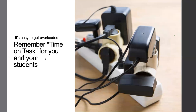A good fully online course takes about 80 to 120 hours to develop — and that can be as intimidating as a giant strawberry is to a little turtle. But if you divide the development and delivery process into bite-sized chunks, you'll find it's very manageable. The OSCAR rubric will help you do that. There's a session after this — the Remote Teaching Pre-Flight Checklist — where we divided the OSCAR rubric into digestible chunks broken out over the rest of the summer, with checkmarks to place as you go.